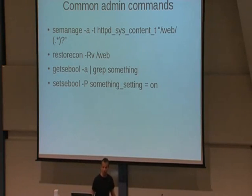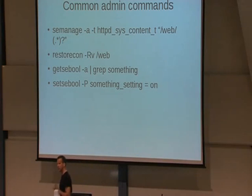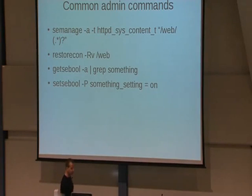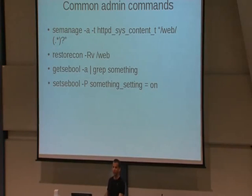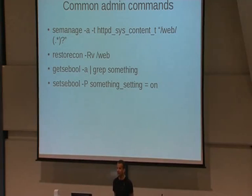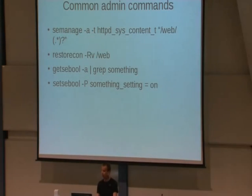The main challenge is finding the right context type. For example, `httpd_sys_content_t` is needed to open a directory for a web server. There are about 3,000 different context types available. You can use Google, or look at the default configuration — if the web server works by default, check the context type set for the default document root. Or run `seinfo -t` and grep the output to find which context types are available. After setting the context type, run `restorecon -r` to apply it to the directory and everything within it.